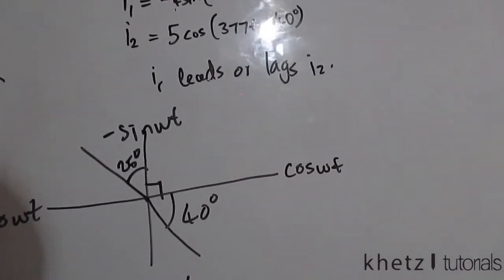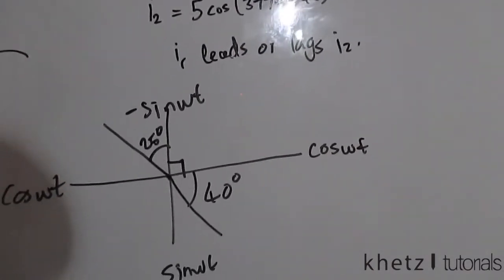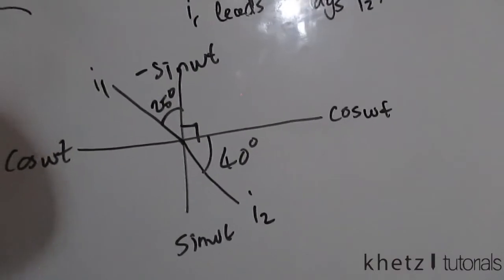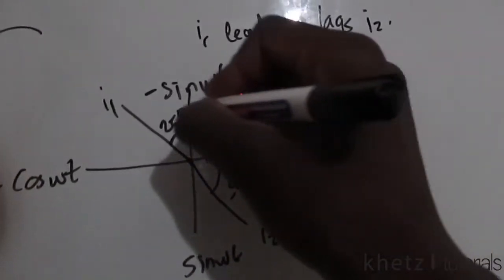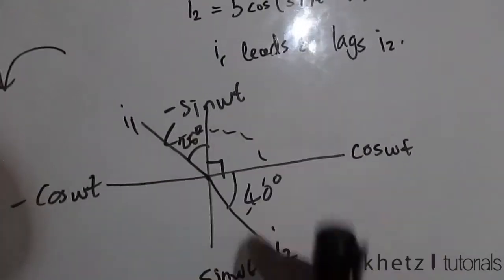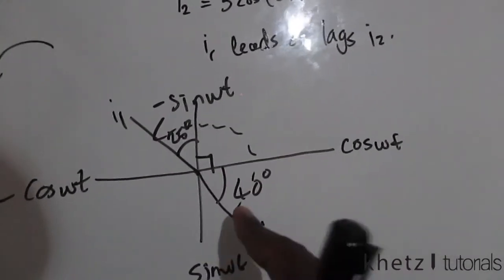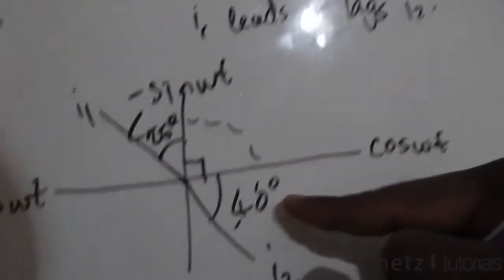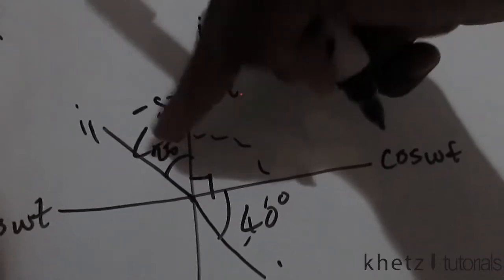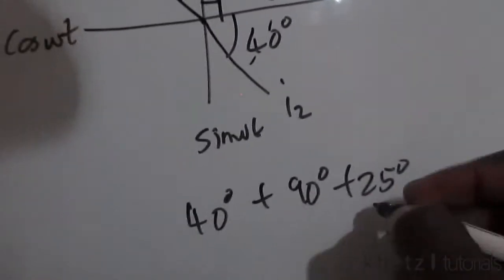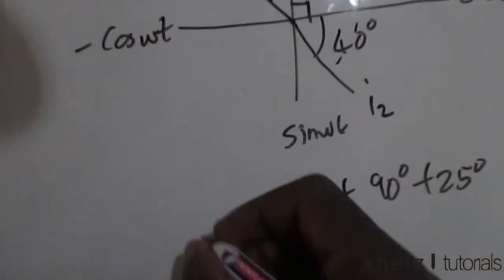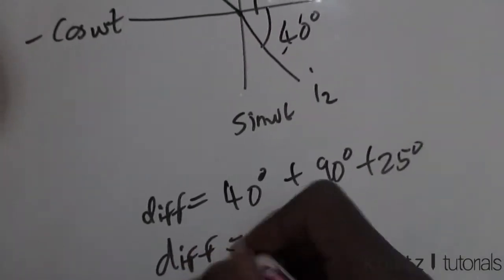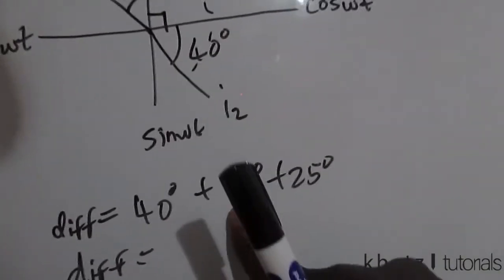So to answer the first question which says find the phase angle between the two, now you have this is your i1 and this is your i2. Now you're interested in this angle, right? So adding everything up should give you the phase angle between the two, and you're going to get 40 plus 90 plus 25. So the difference is equal to 40 plus 90 is 130, added to 25.